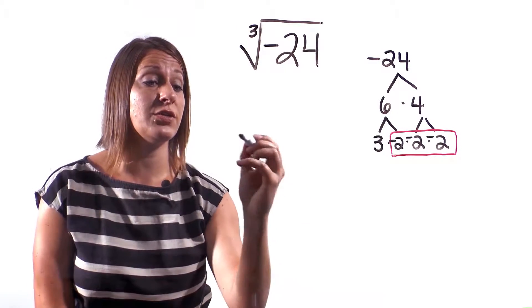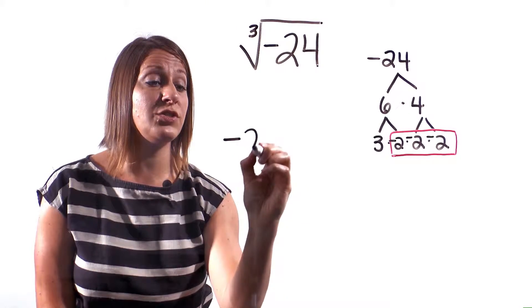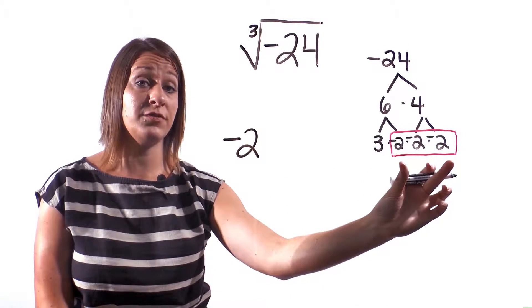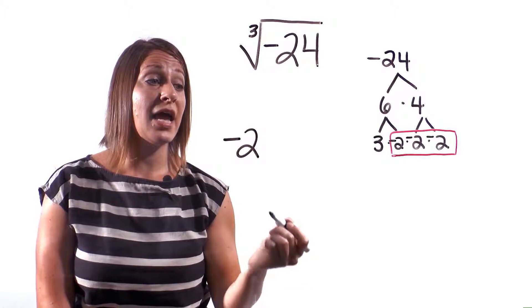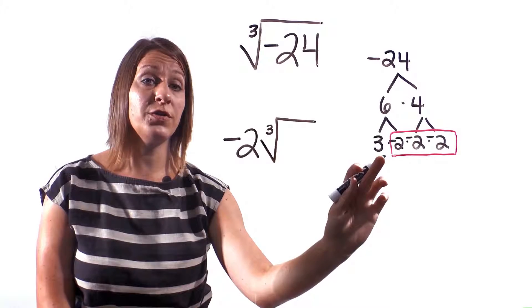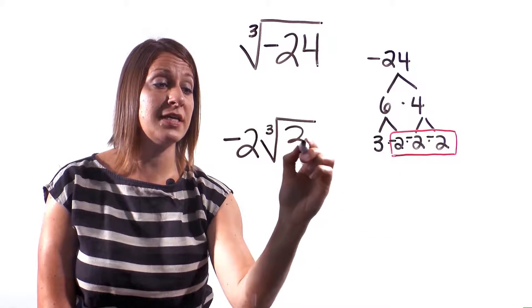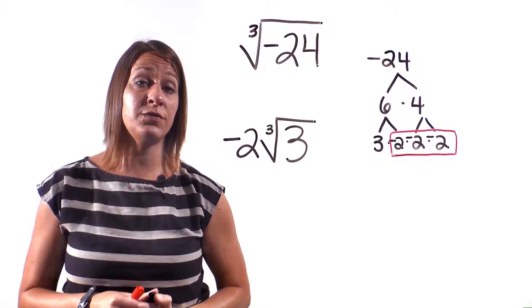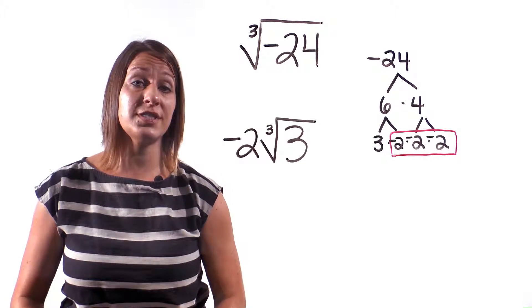And so to write this answer, we'll put our negative 2 on the outside. That represents our set of triplets over here. And we'll put our cubed radical, and we'll put our 3 on the inside of the radical. So the simplified answer is negative 2 cubed roots of 3.